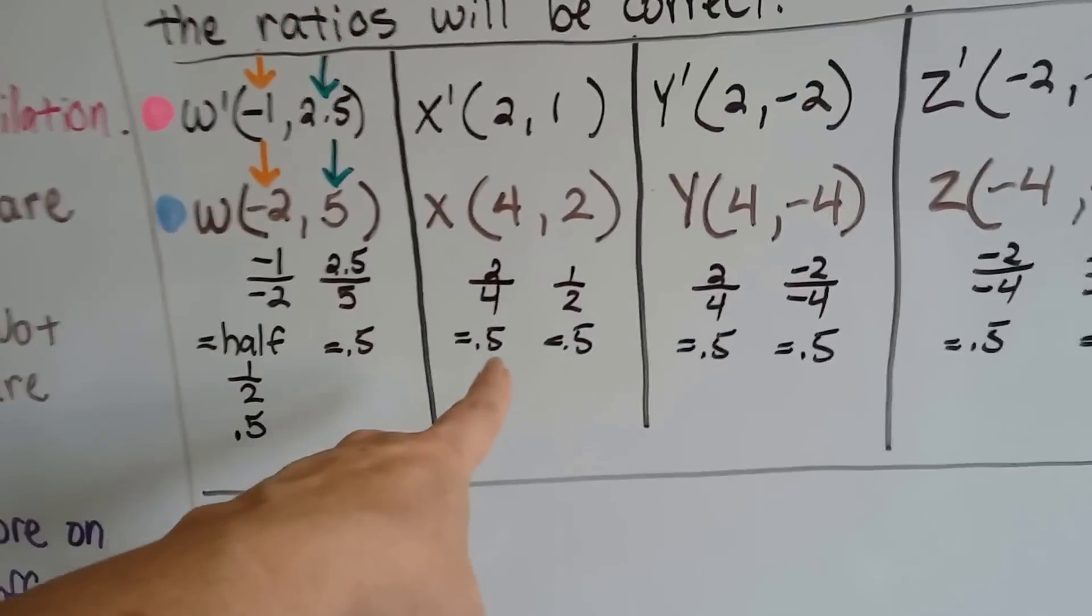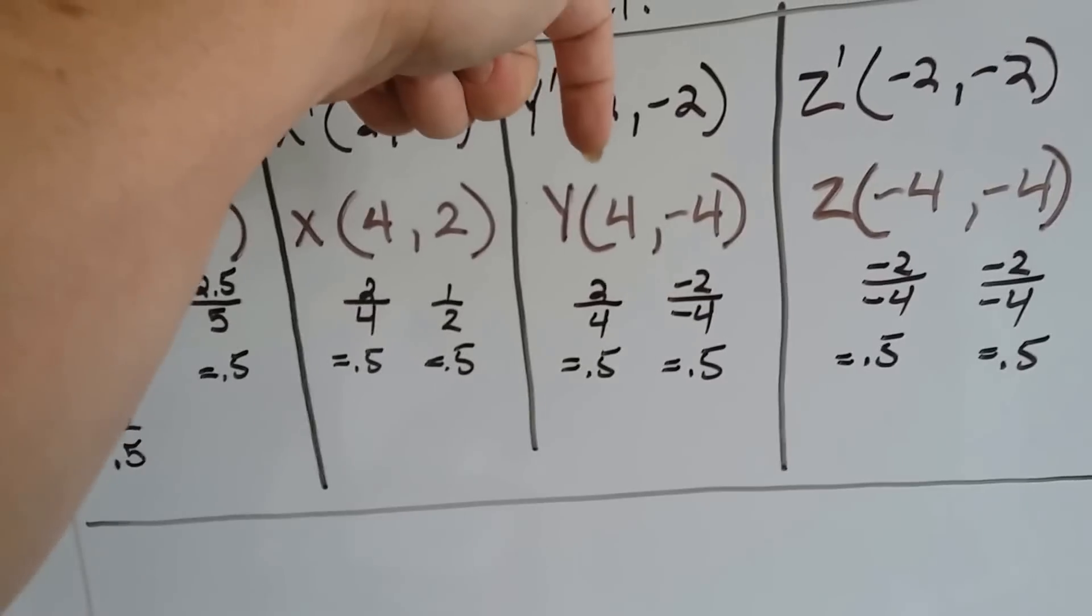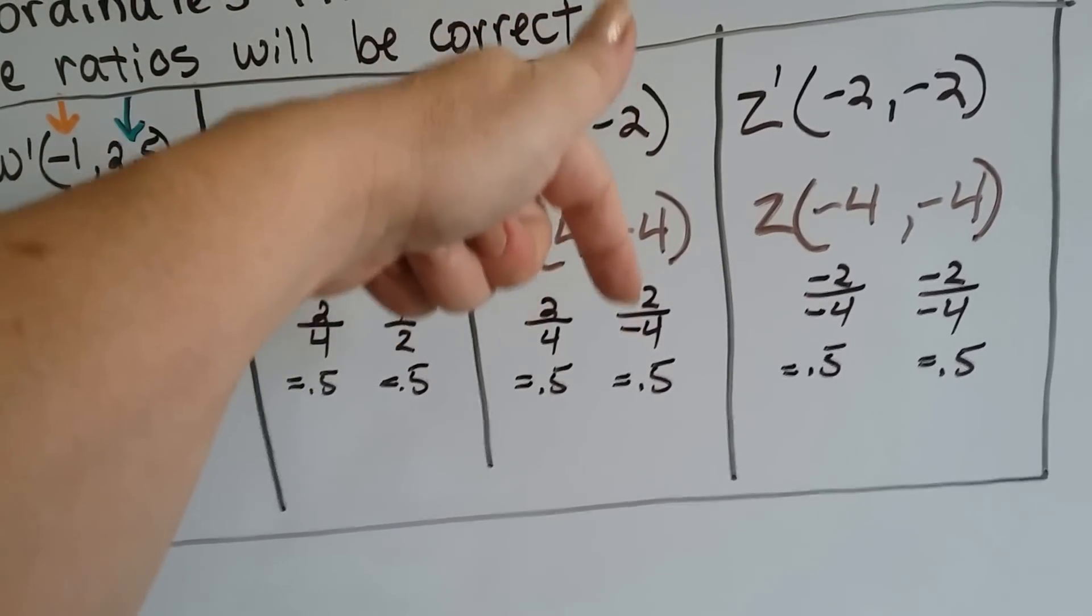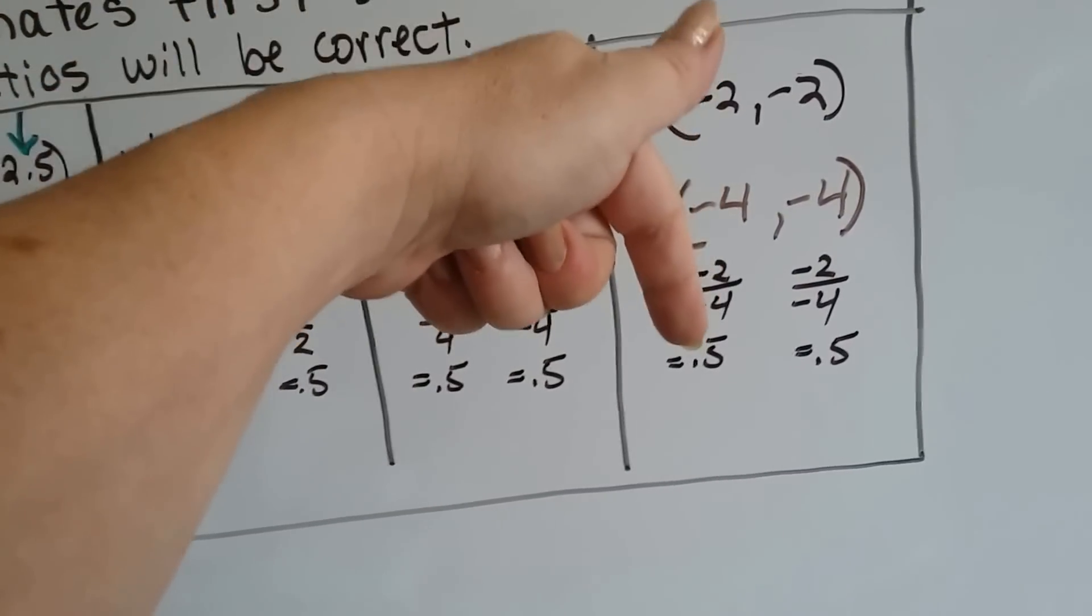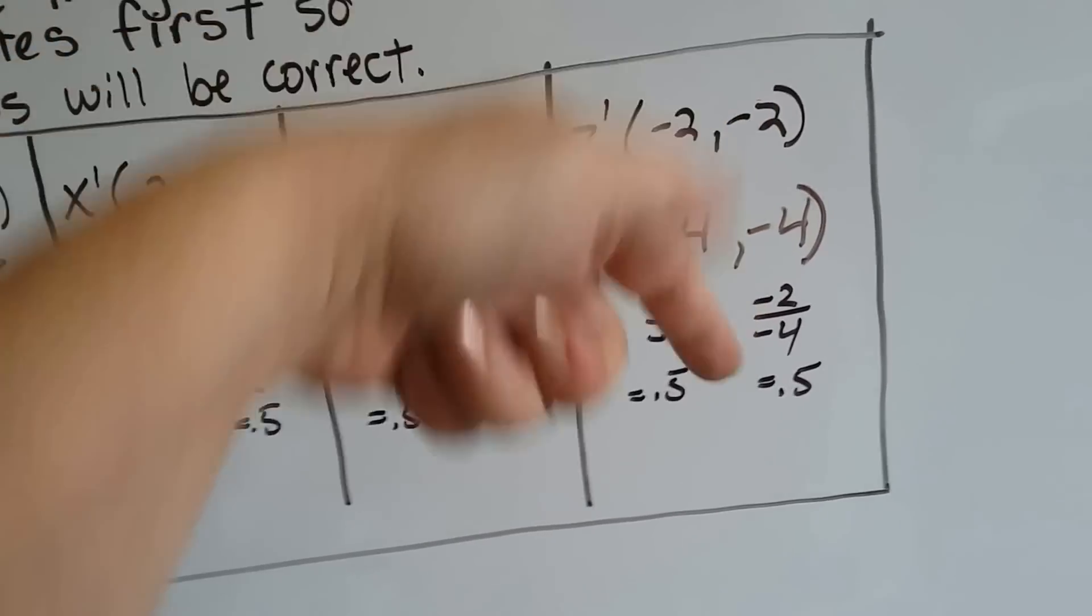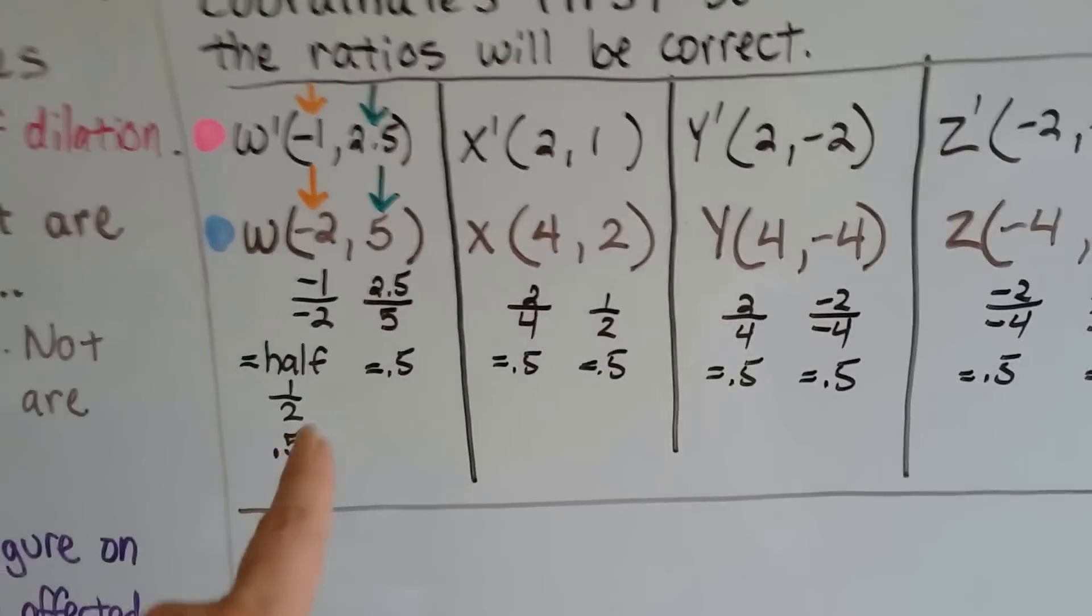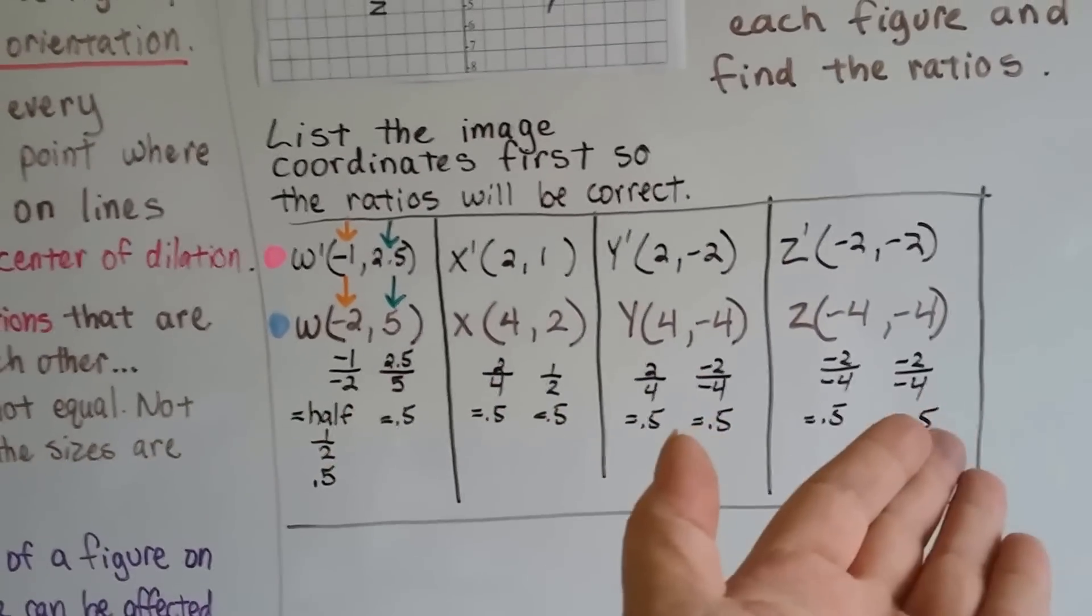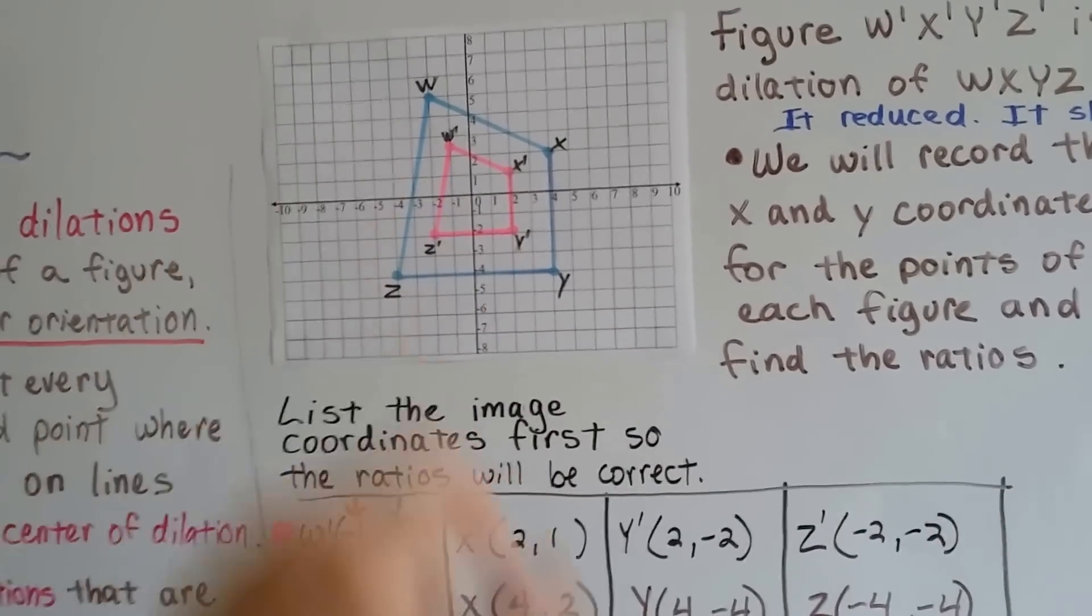Two over four. That makes point five. That's a half. One over two. That makes point five. Two over four. That makes point five. Negative two over negative four. The negative symbols cancel each other out. So it's a positive point five. Negative two over negative four again, a positive 0.5, and negative two over negative four again is a positive 0.5 because they canceled each other out.